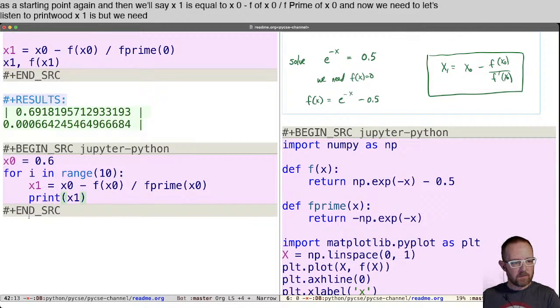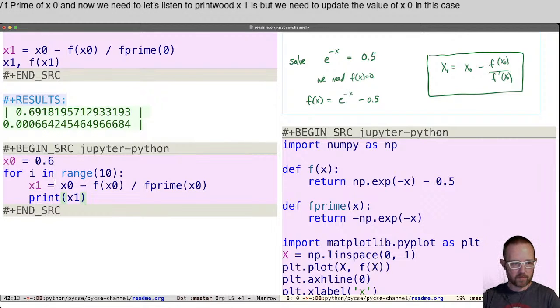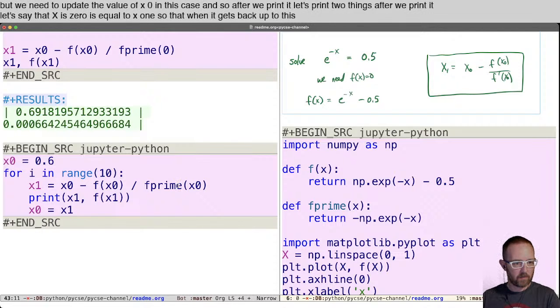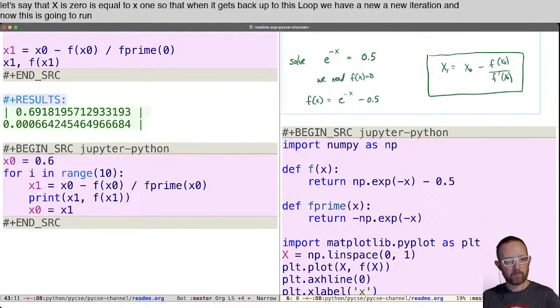But we need to update the value of x0 in this case. And so after we print it, let's print two things. After we print it, let's say that x0 is equal to x1. So that when it gets back up to this loop, we have a new iteration. And now this is going to run 10 times. Let's try it out.